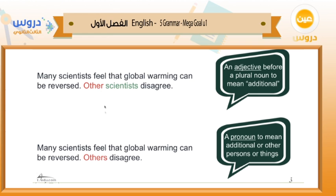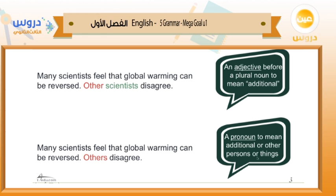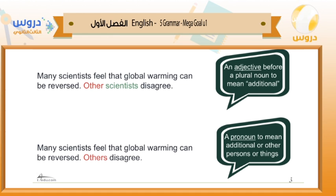In the second sentence, 'others' is not an adjective — it's a pronoun that means additional or other persons or things. So 'others disagree' means other persons disagree. Here it's a pronoun, whereas in the first sentence it's an adjective before a noun. 'Other' is used as an adjective before a plural noun to mean 'additional.' 'Others' is used as a pronoun to mean additional or other persons or things.